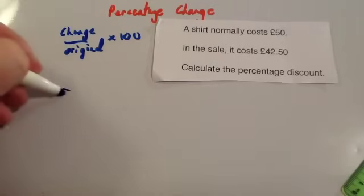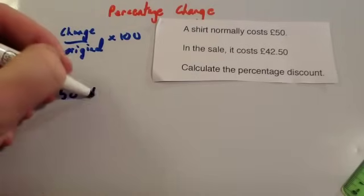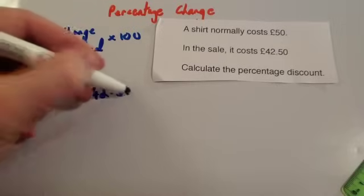So let's first of all find the change. So it's 50 subtract 42.5. That equals 7.5.